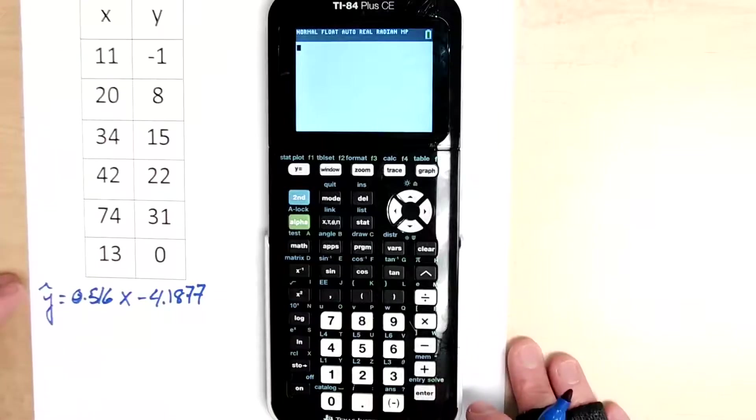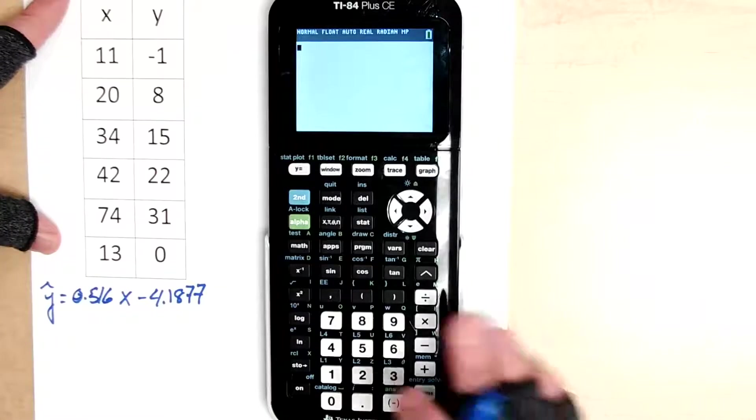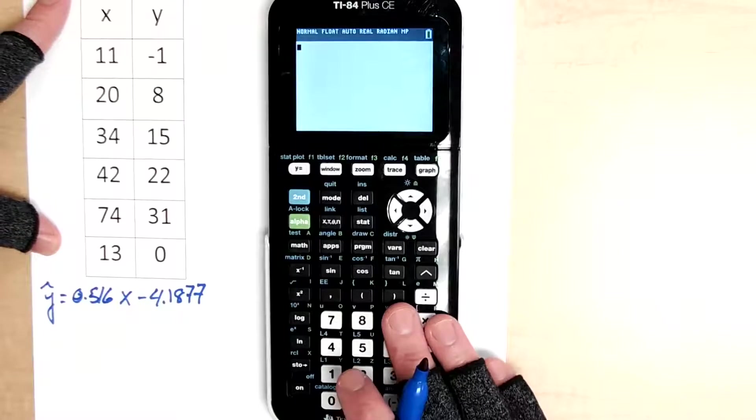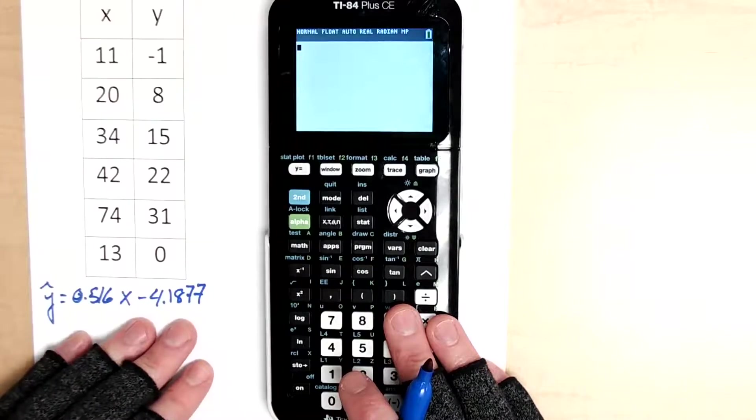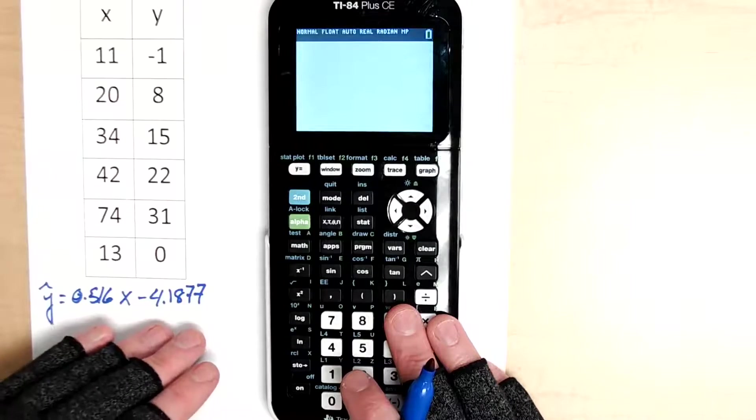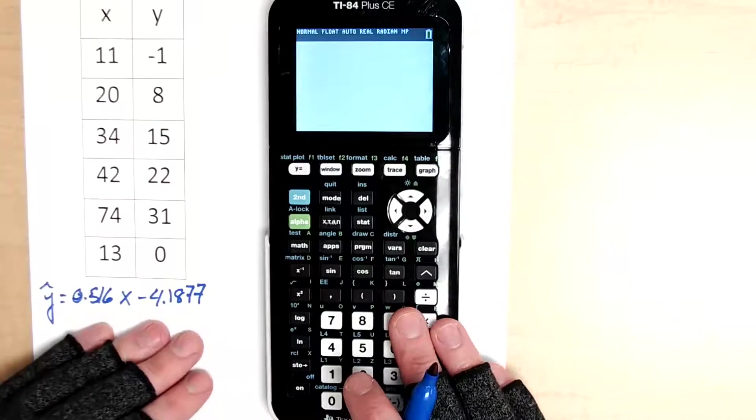Welcome back to this tutorial sequence. So far we have taken our data, we've entered it, we've created a scatter plot from it, we have found the regression equation for that data, and we have also graphed, we've stored and graphed that equation.